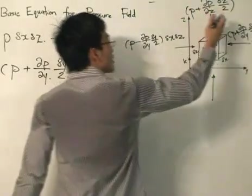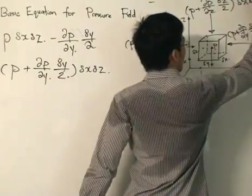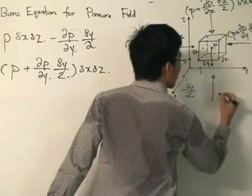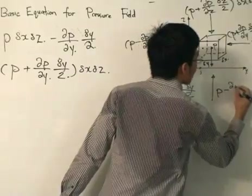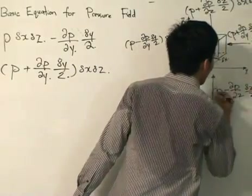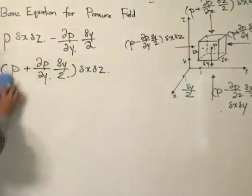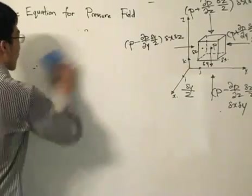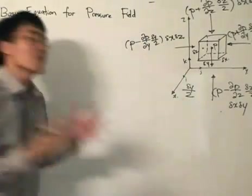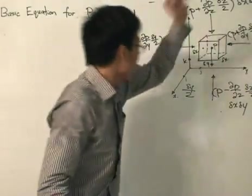And for here it would be P minus partial P partial z times delta z divided by 2, multiplied by delta x delta y. That is a long one, but we're making progress. What is the progress? Well, basically, we have found out the forces that are acting on the surface of the water particle.